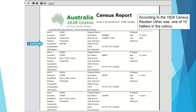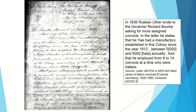If you're using the CD-ROM, you can search by occupation. Here we have a reference to Reuben Uther, who is a hatter — one of only 10 hatters in the colony in 1828. When we combine the census with colonial secretary's letters, we get more information on Reuben's occupation and his manufactory. In 1836, he wrote to Governor Burke asking for more convicts to be assigned. He states that he's had a manufactory since 1812, produces between 5,000 and 6,000 hats annually, and has employed anywhere from 8 to 14 convicts at one time as hatters.